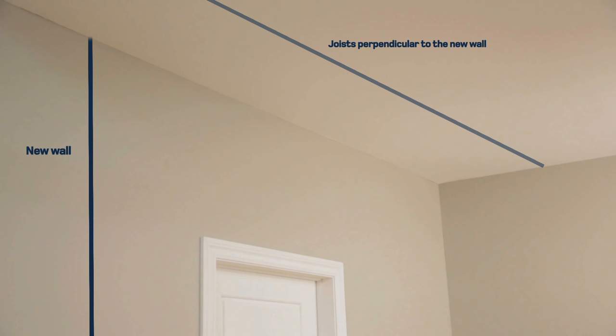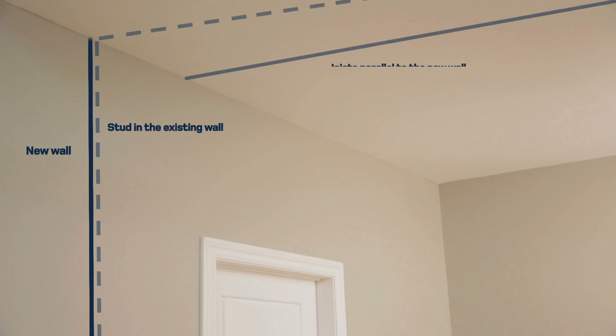The location of the new wall depends in part on the alignment of the ceiling joists. If the joists are perpendicular to the line of the new wall, you can install it almost anywhere, preferably against the stud in the existing wall, the one into which the new wall will be anchored. If the ceiling joists are parallel to the line of the new wall, its location will be determined by the joist near the intended location.